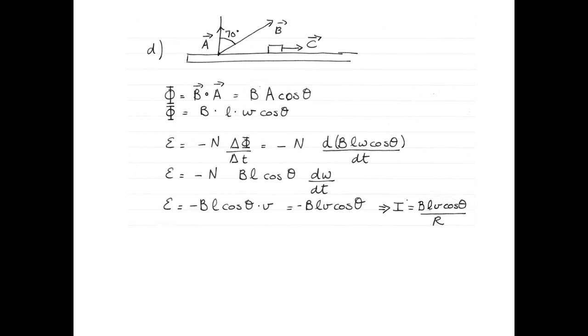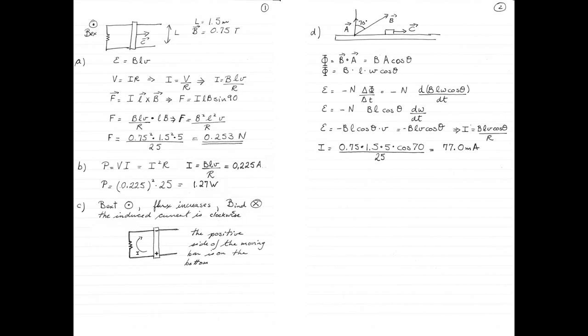This means that the magnitude of our current is BLV cos theta divided by R. Plugging some numbers in, 0.75 Tesla multiplied by 1.5 meters, multiplied by 5 meters per second, multiplied by cos 70, and divided by 25 ohms is 77 milliamps. Here is the solution on two pages. Spread the joy of physics!